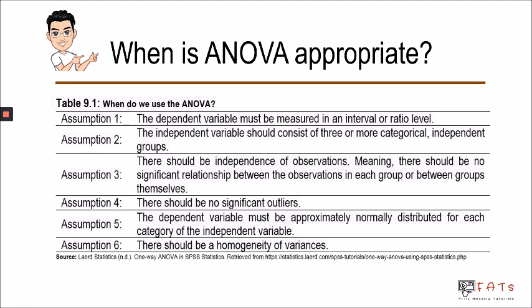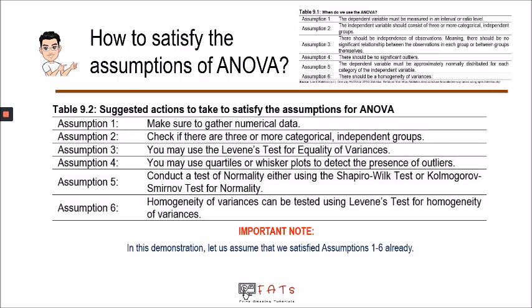Assumption three: we should confirm that the observations within or between groups are independent. For assumption four, we should check that there are no significant outliers. Assumption five: the data should be normally distributed. And assumption six: there should be homogeneity of variances.